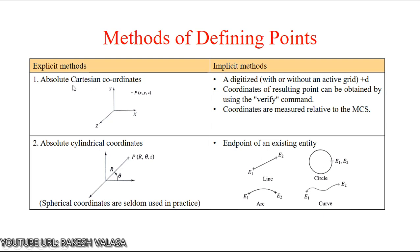In the basic Cartesian coordinate form, we take only X, Y, Z. Another method is absolute cylindrical coordinate, where we take radius, angle, and Z direction. Spherical coordinates are seldom used in practice. In the implicit method, we can consider the end point of an existing entity. For example, a line has two end points E1 and E2. A circle also has two end points: starting point E1 and closing point E2. An arc also has two end points E1 and E2, as does a curve.